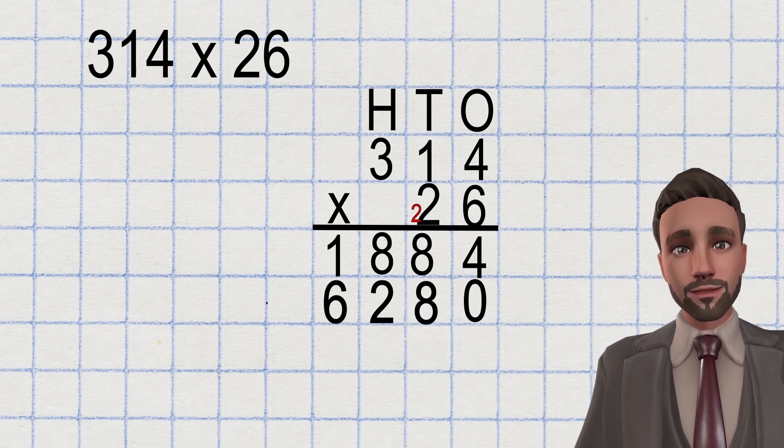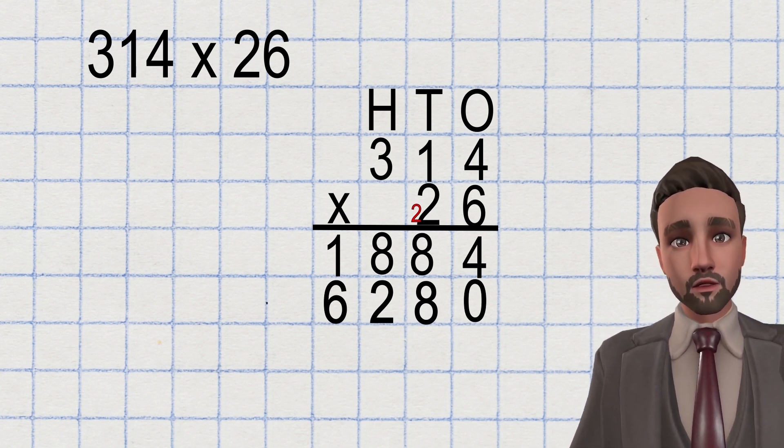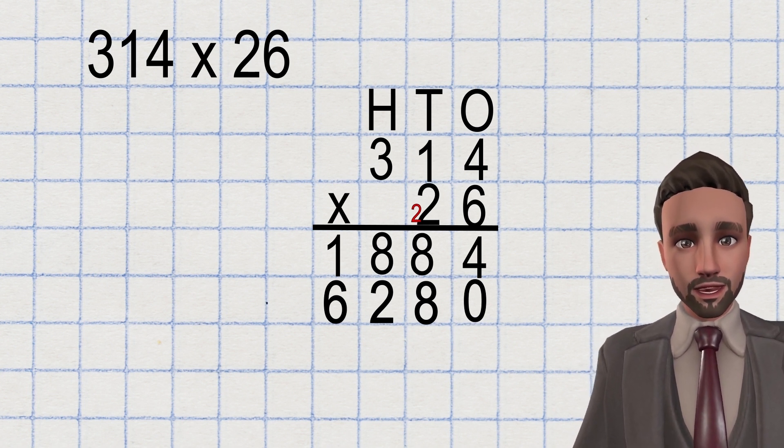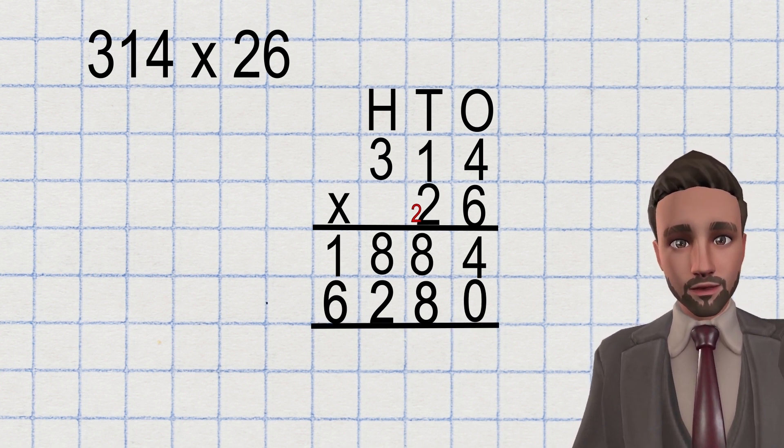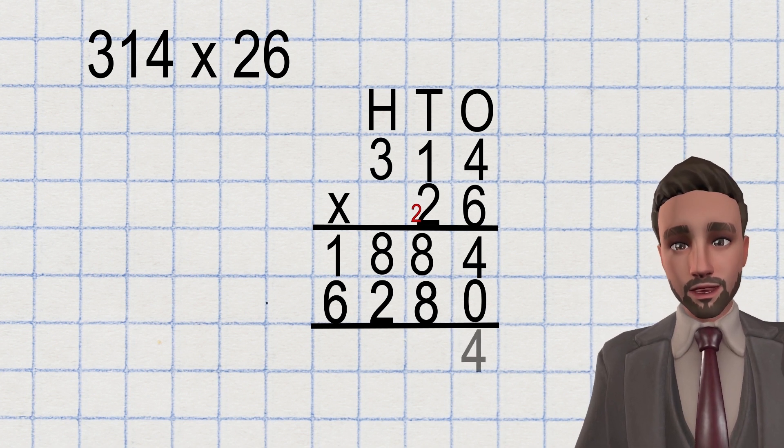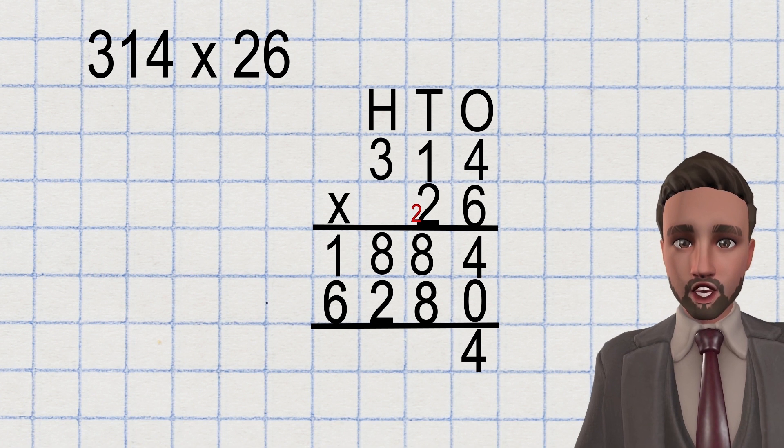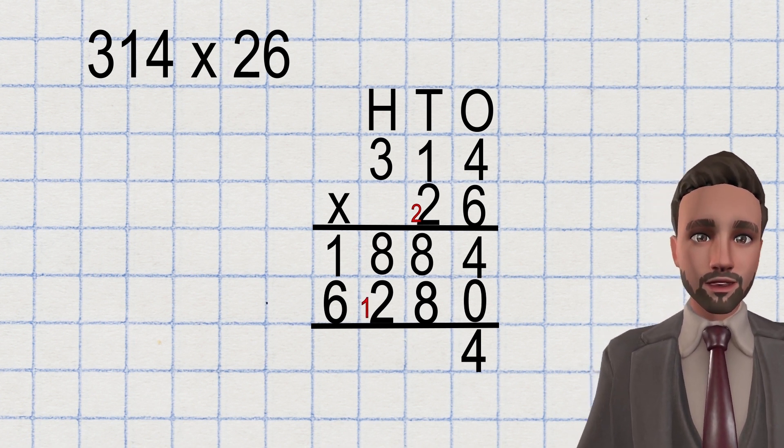The final step is adding both products together, both rows. So just like column addition, we start in our ones and work our way to the left. 4 add 0, 4. 8 add 8, 16. Just like column addition we carry over the 1. 6 goes down.